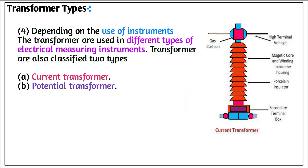Number 4: Depending on the use of the instrument. Transformers are used in different types of electrical measuring instruments and are also classified into two types: current transformer and potential transformer.